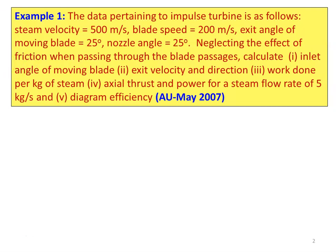Example 1. The data pertaining to an impulse turbine is as follows: steam velocity is 500 meters per second, blade speed 200 meters per second, exit angle of the moving blade 25 degrees, nozzle angle 25 degrees, neglecting the effect of friction. Calculate inlet angle of the moving blade, exit velocity and direction, work done per kg of steam, axial thrust, power for a steam flow rate of 5 kilograms per second, and diagram efficiency.